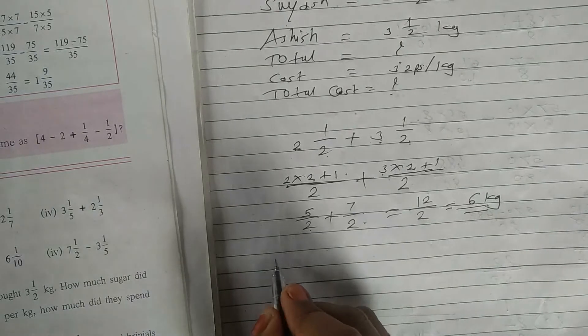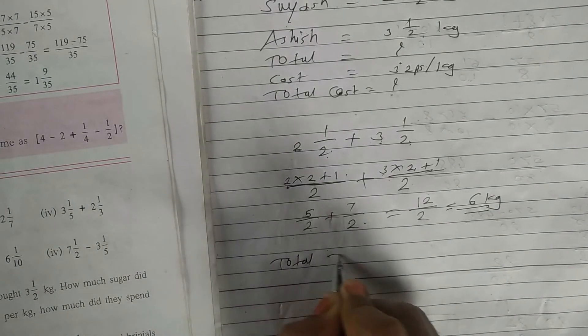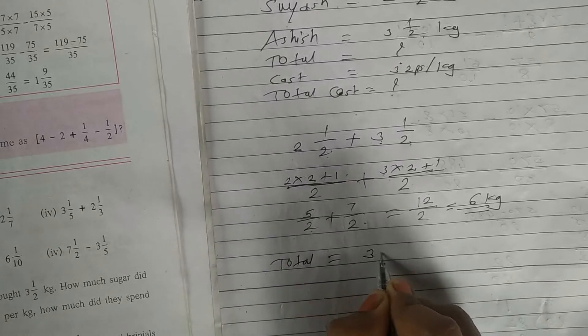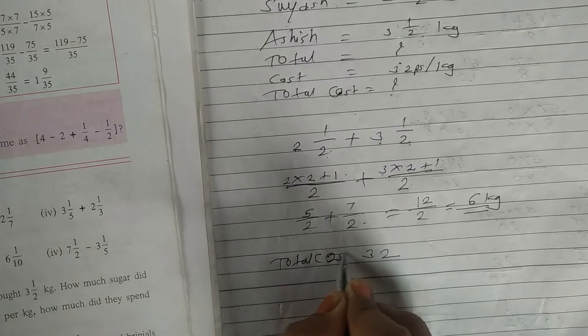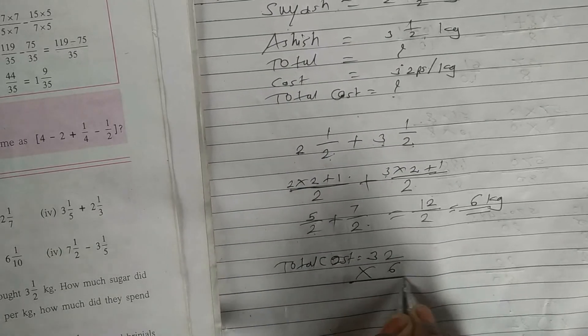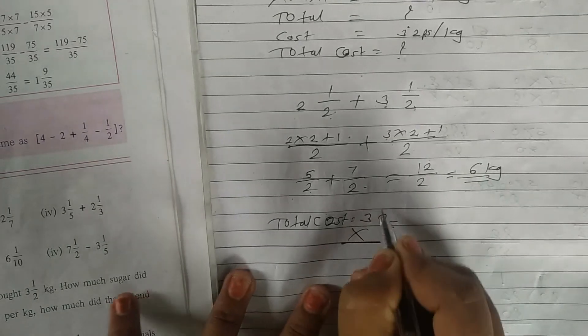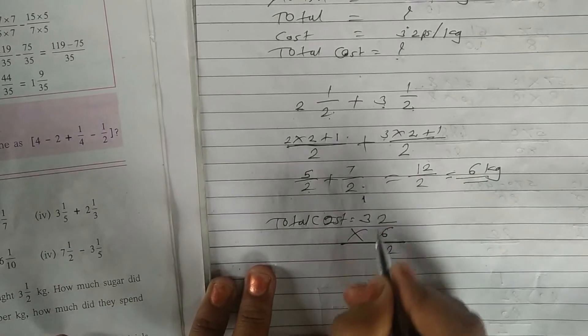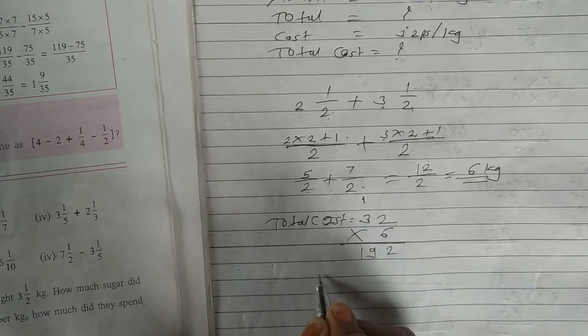And for one kg cost is 32, so total cost, 32 multiply by six. So you have to do this product. I hope you know product. Six twos is 12 carry one, six threes is 18 plus one, 19. So total amount, our answer is 192 rupees.